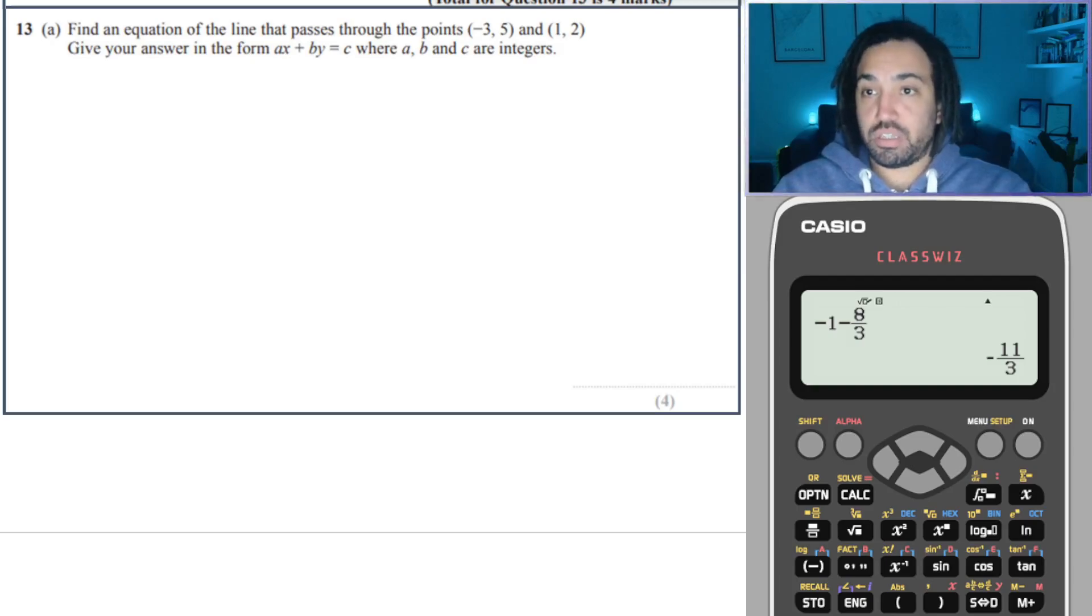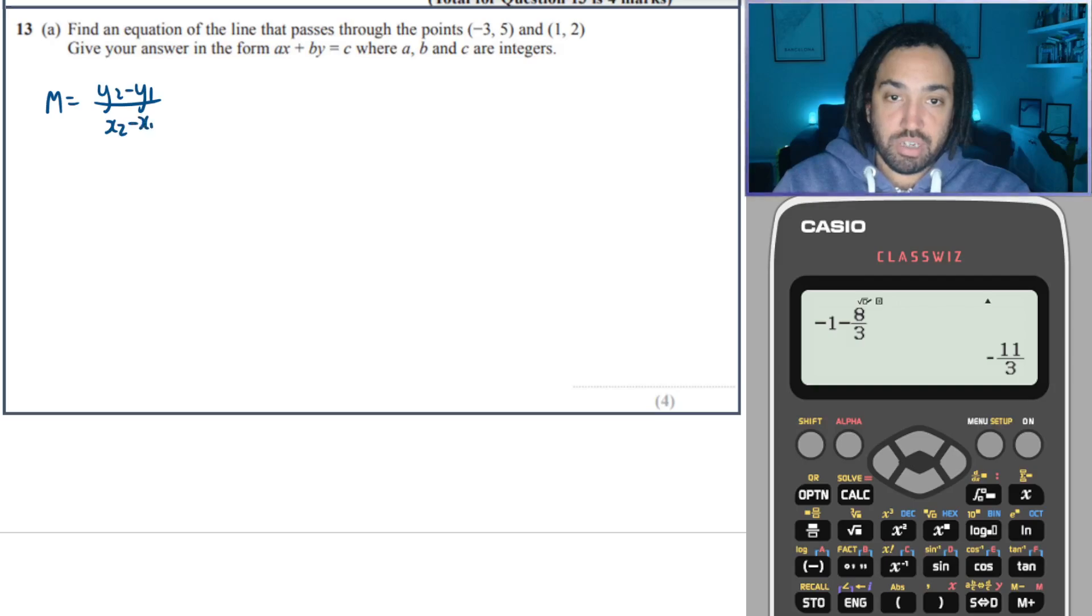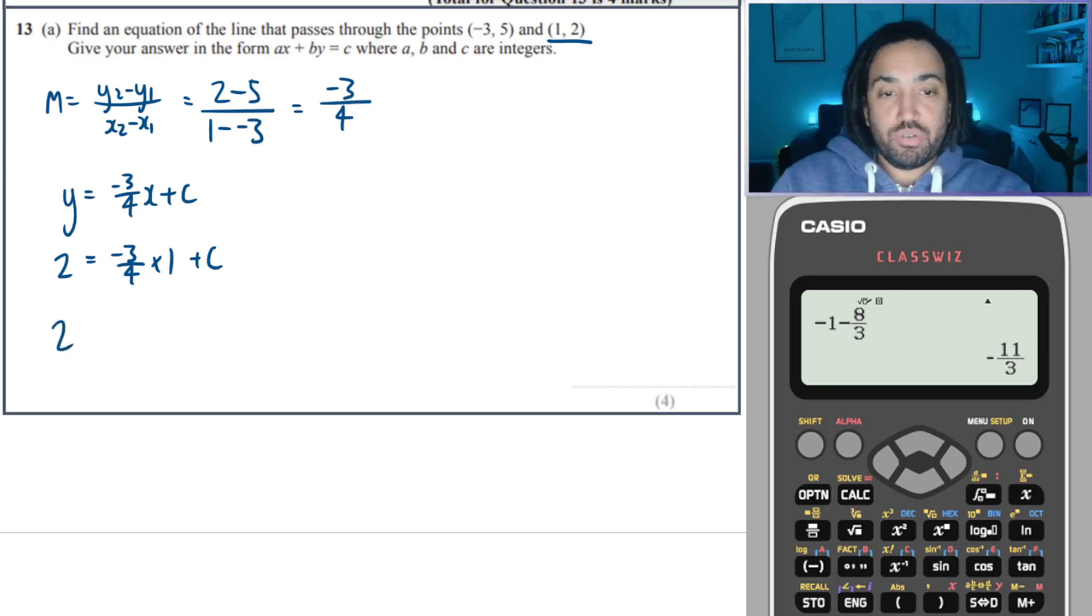Okay, next question is very similar to the last one, so I will skip through it at a bit of a quicker pace. We will do the same formula to find the gradient, which will be 2 minus 5 over 1 minus minus 3, which is minus 3 over 4. So therefore, y is equal to minus 3 over 4x plus c. And I will use this coordinate to find the c value. So y is 2 when x is 1. So therefore, 2 is equal to minus 3 quarters plus c.